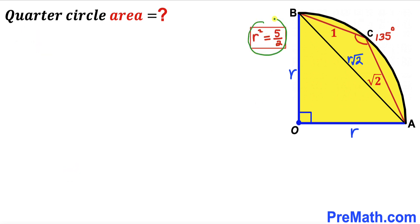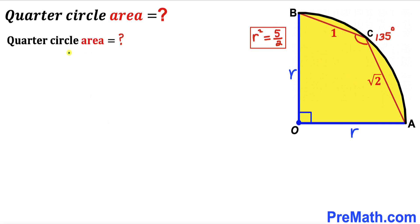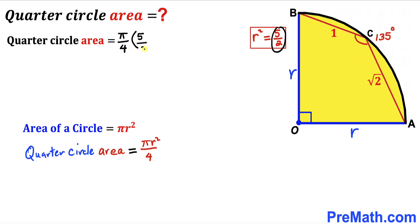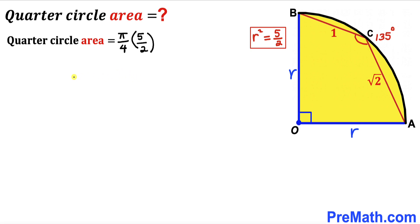Now for the final step: calculating the area of the yellow quarter circle. Recalling the area of a circle formula, Area = πR², the area of a quarter circle is πR²/4. Substituting R² = 5/2, the area equals π/4 × 5/2 = 5π/8 square units.